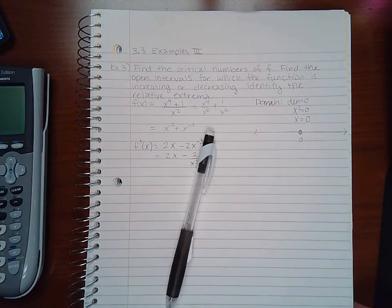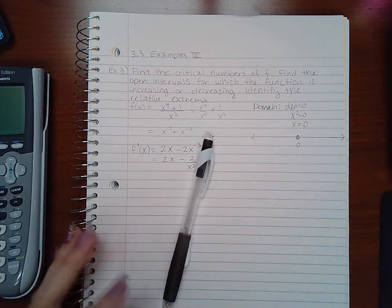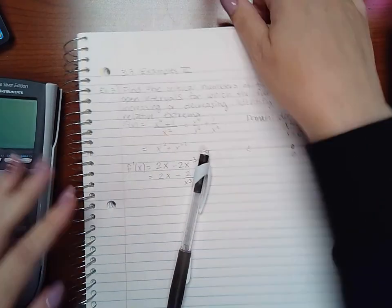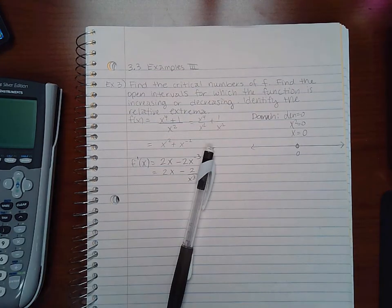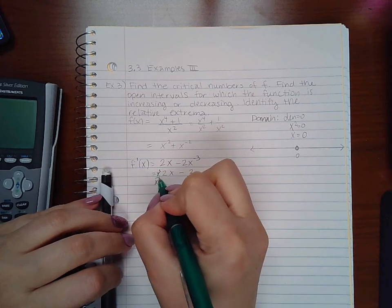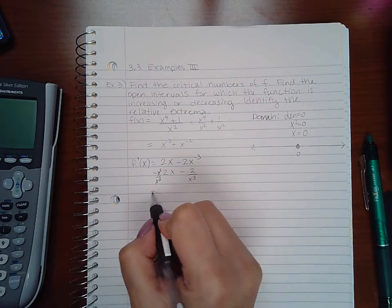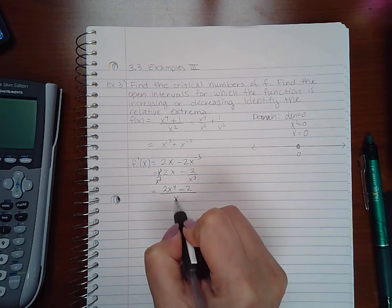To combine these, I multiply by x cubed over x cubed. This gives 2x to the fourth minus 2 all over x cubed.